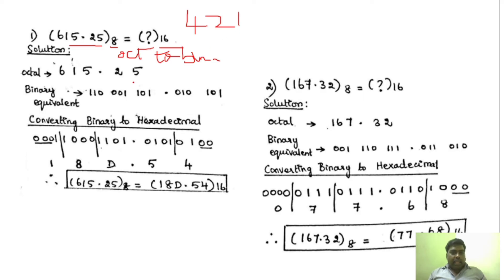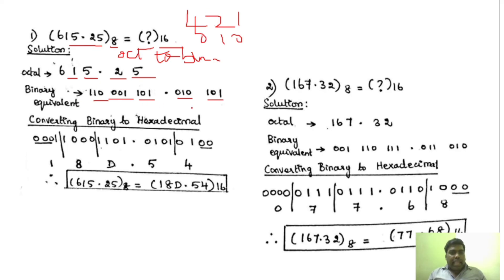So for the digit 5, in 421 code it is 1, 0, 1. Similarly, 2 is 0, 1, 0. And again for 5, it is 1, 0, 1. For 1, I will write as 0, 0, 1. And for 6, it is 1, 1, 0. This is the binary equivalent for this octal number.